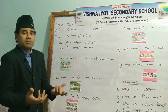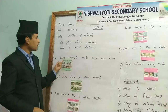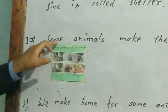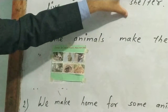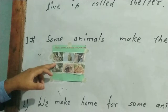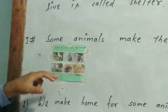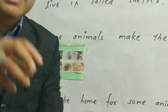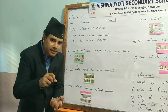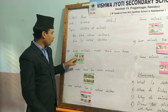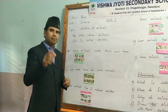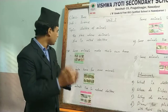Point number one: some animals make their own home. A sparrow lives in a nest. Birds live in nests. A weaver bird also lives in a nest — they weave their nest by themselves. You may have seen that long nest on the banana tree, woven by the weaver bird. A woodpecker lives in a hole — it makes a hole inside wood.